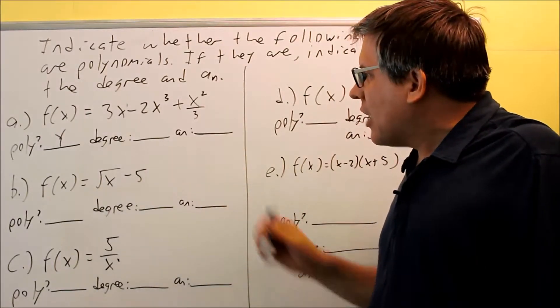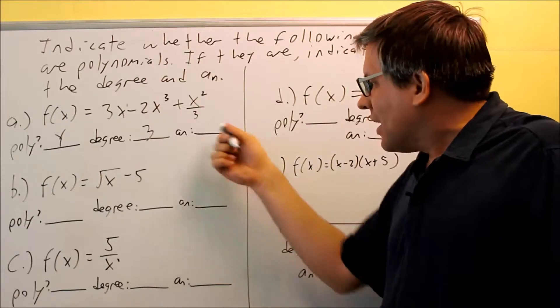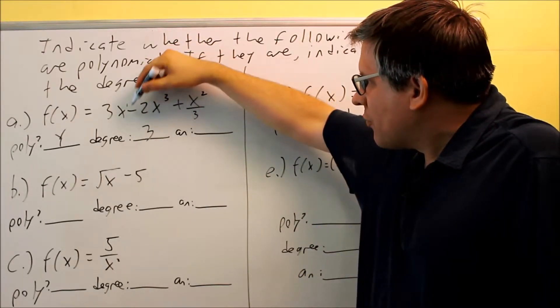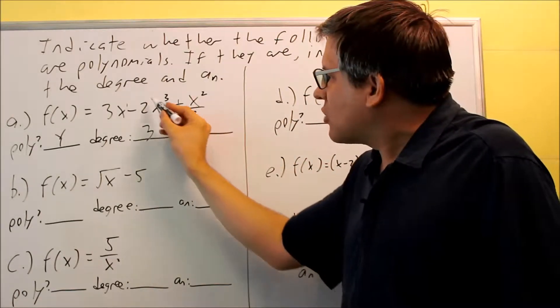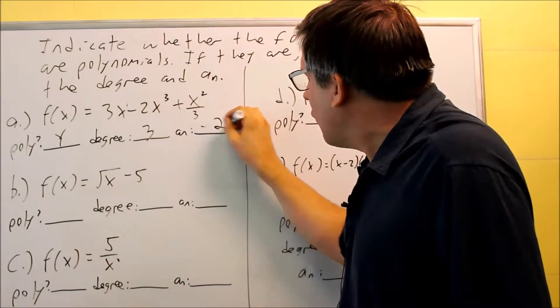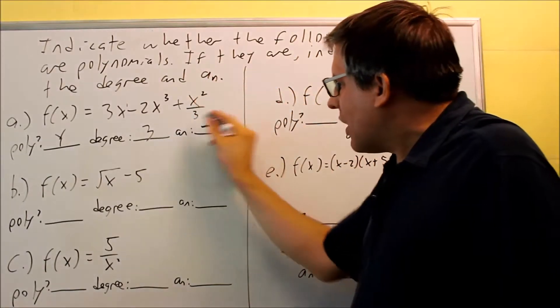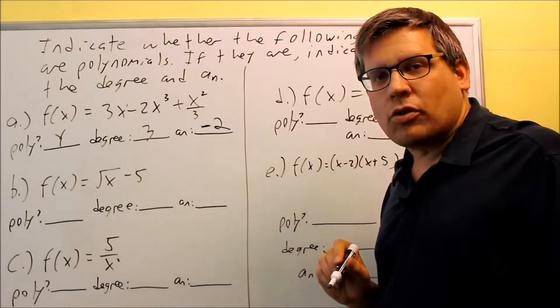The degree is going to be the highest power that you see here. In this case, it's going to be 3. And the a_n, that's the number here that comes in front of the x with the highest power. It's the coefficient of the x with the highest power. That would be negative 2. You'll see what the importance of that a_n is later when we get into other examples. The a_n is going to become important later on.